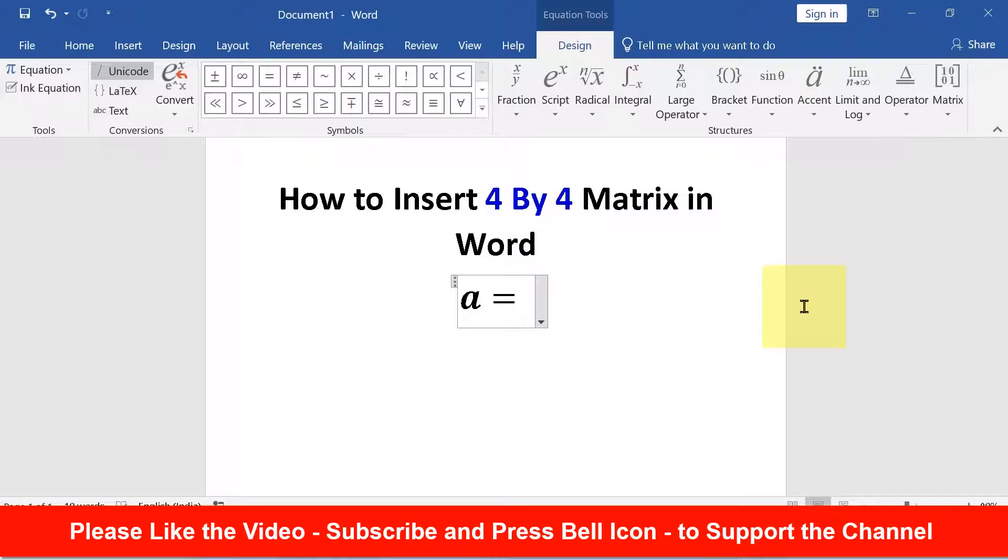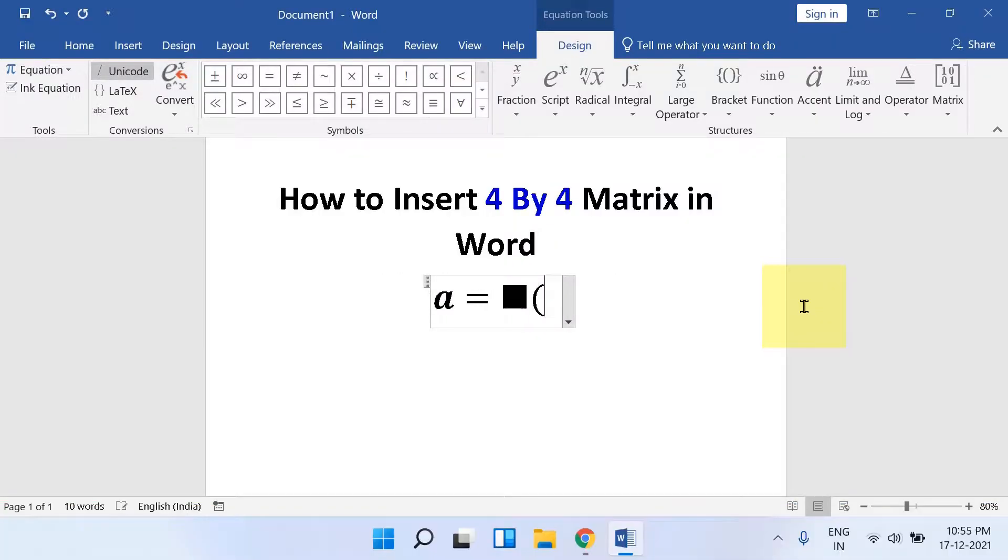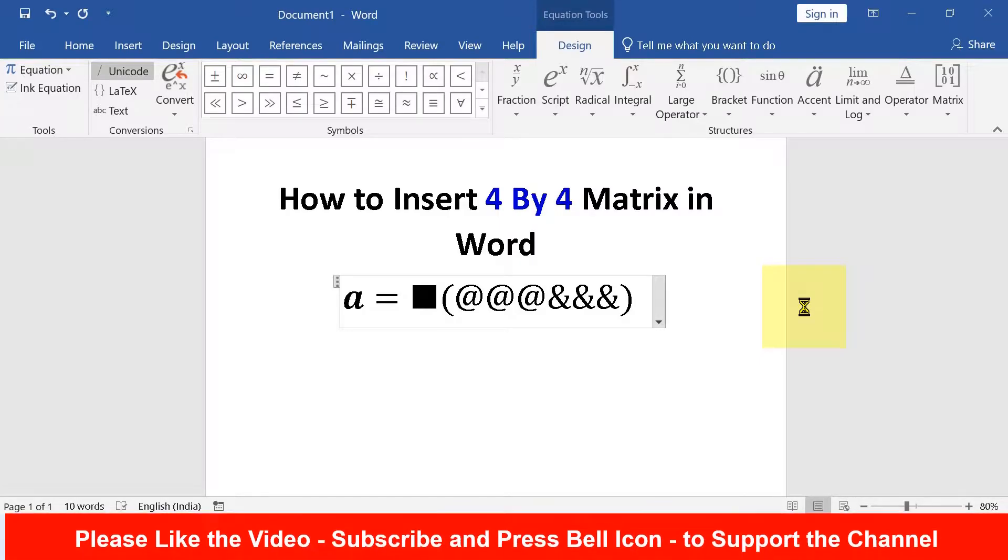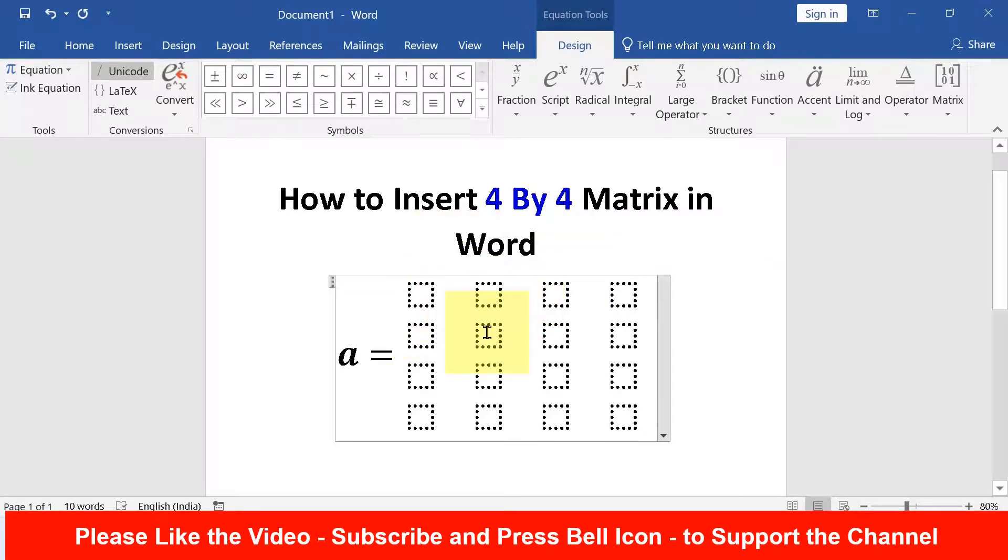Now the shortcut: type backslash matrix round bracket, type at three times and three, close the bracket and press space bar to insert 4x4 matrix.